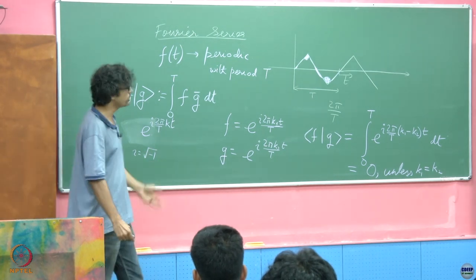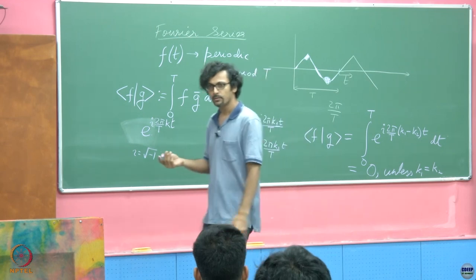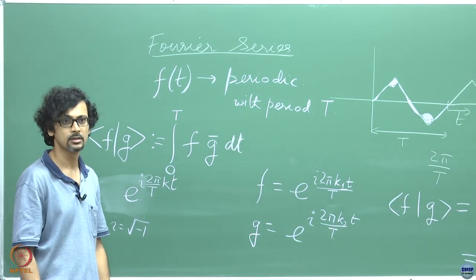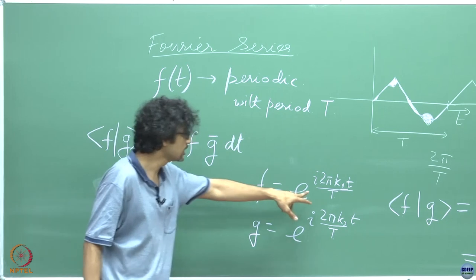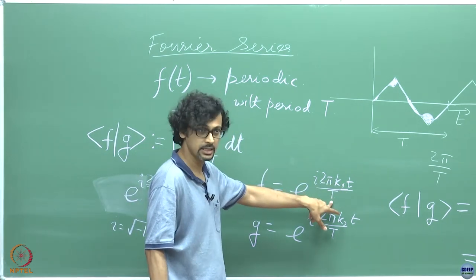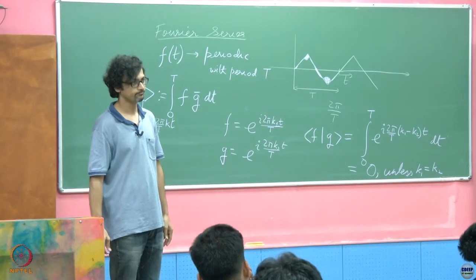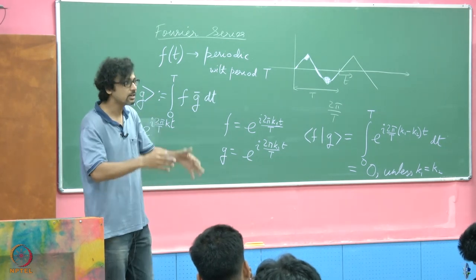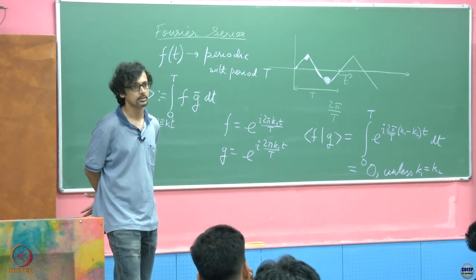Which means, what should we do? Given any periodic signal, if you want to approximate it up to a first, say l number of terms, what should we do? We should take inner products naturally with the first l terms in this particular basis, the basis that contains terms such as e to the i 2π k t upon T, where k ranges from 0, 1, 2, 3, 4, and so on till l minus 1.